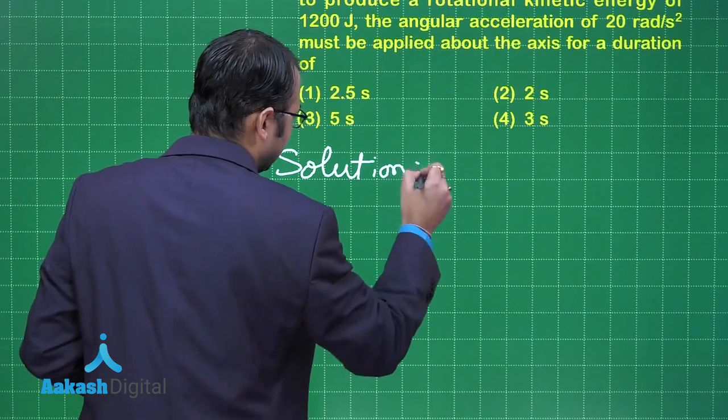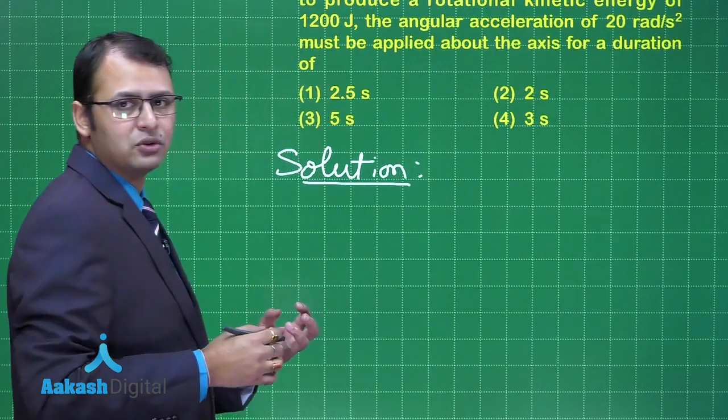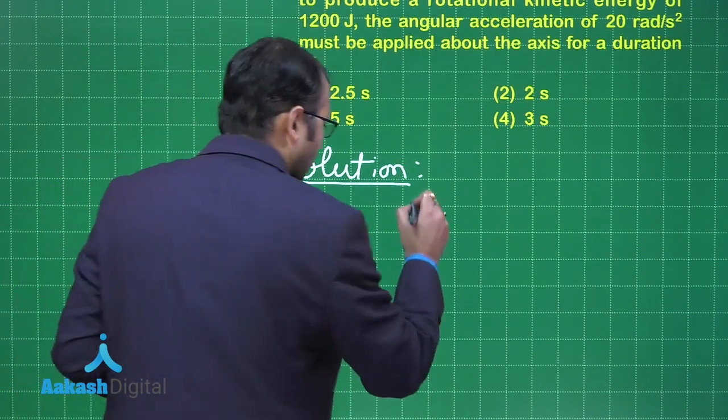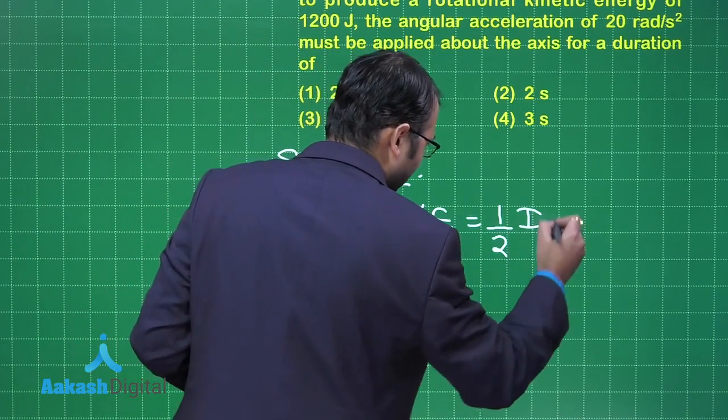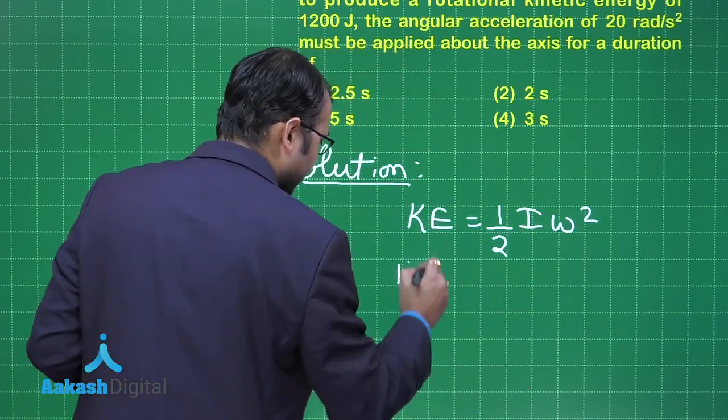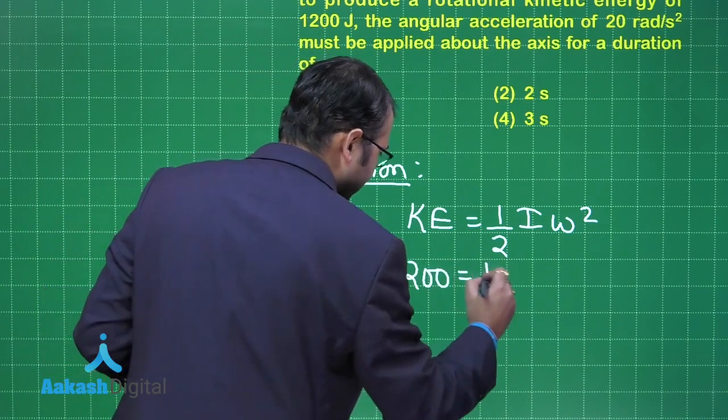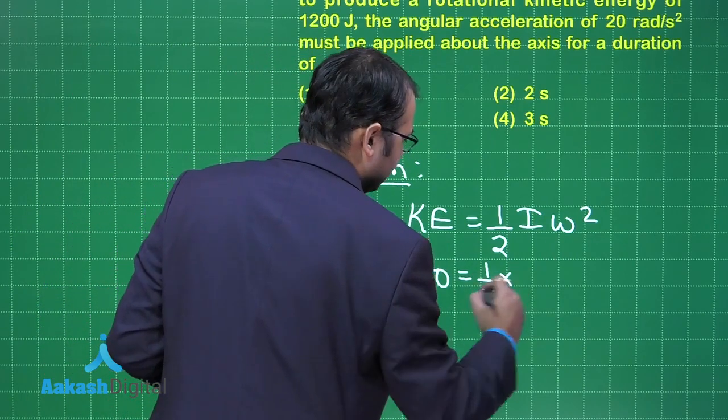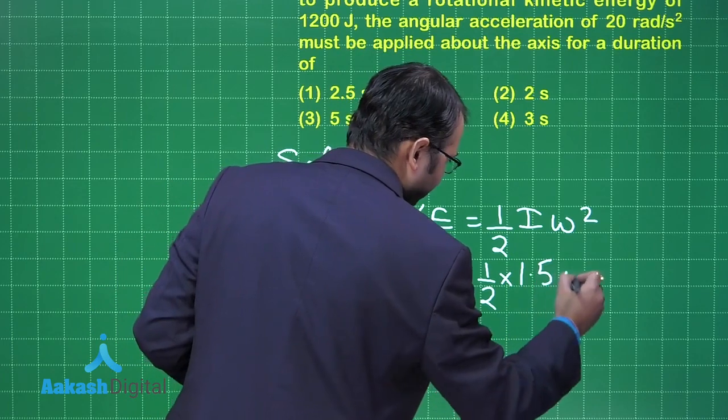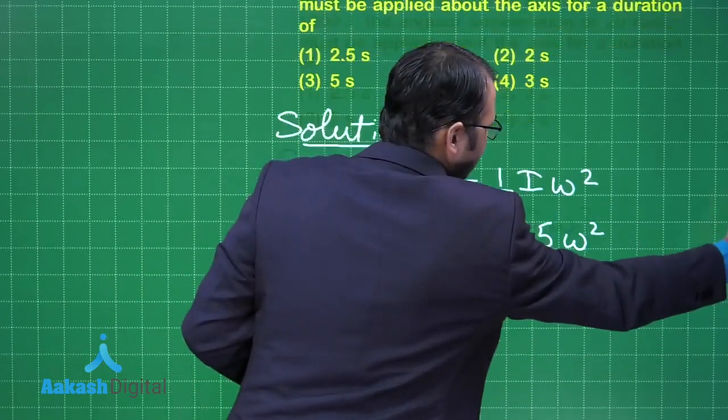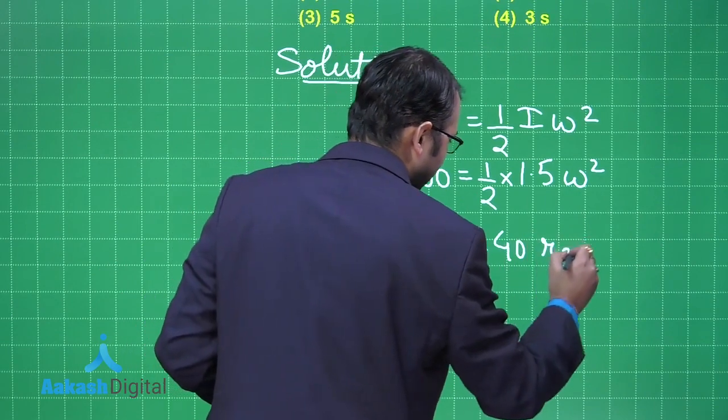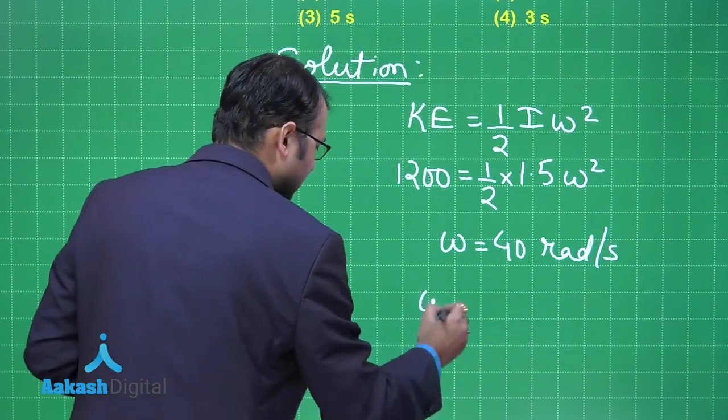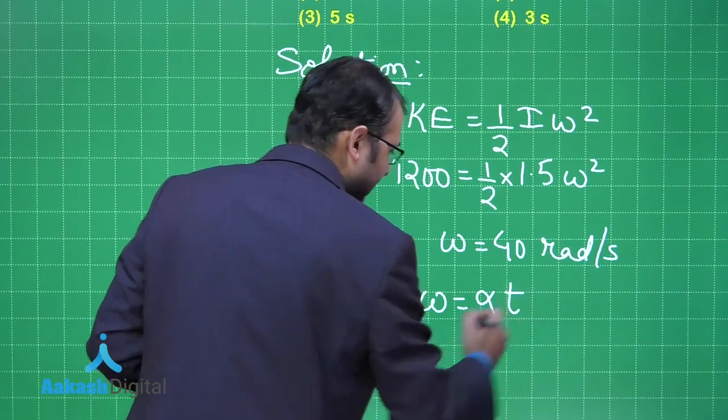In order to know the time or duration we have alpha, so we need omega here. So kinetic energy rotational is given by half I omega square. What is the value of kinetic energy here? That is 1200. This is half into what is the value of I? That is 1.5 into omega square. When you solve this one, you will get omega as equals to 40 radian per second.